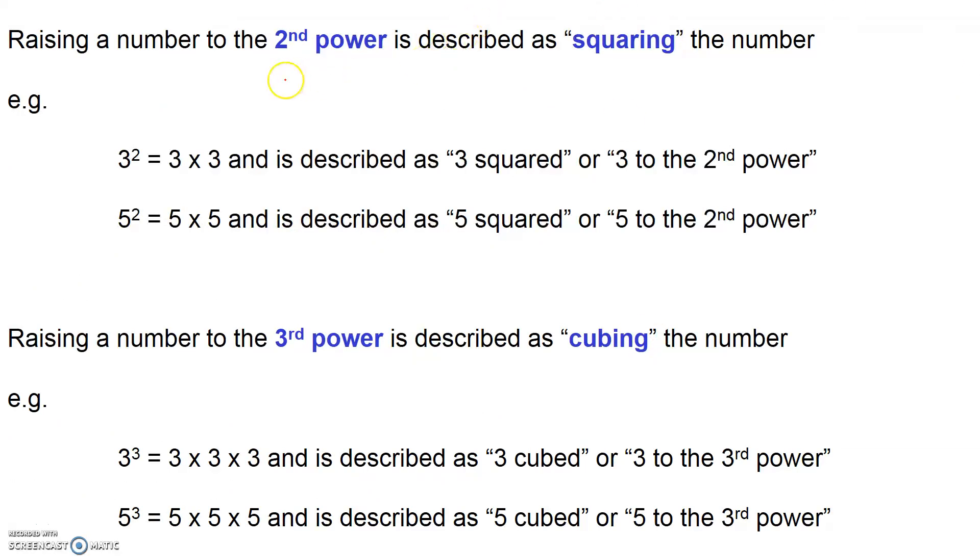Some of these powers have special names. The second power, for example, is often referred to as squaring a number. So three to the power of two might be described as three squared. Raising a number to the third power is often referred to as cubing a number. So three raised to the power of three or three to the third power will be referred to as three cubed. And the same here for five. Another example, five cubed or we can say five to the third power.